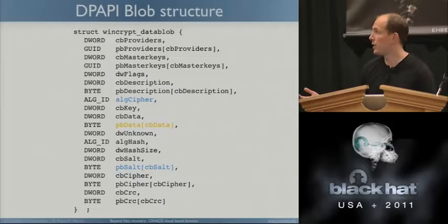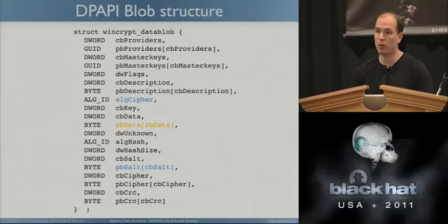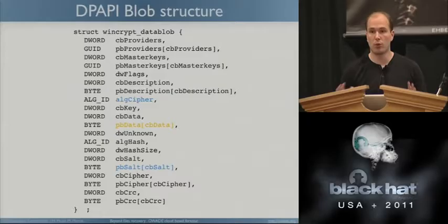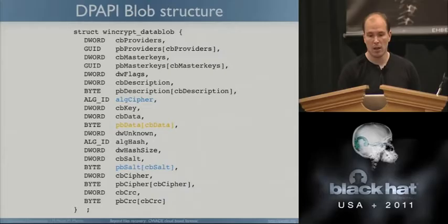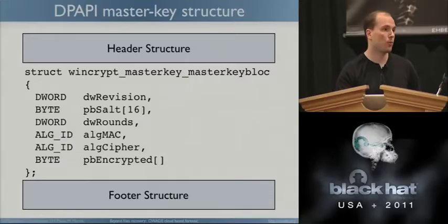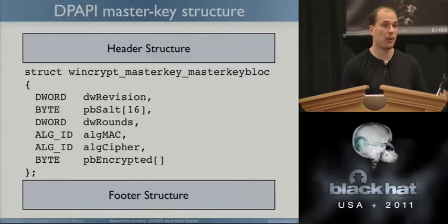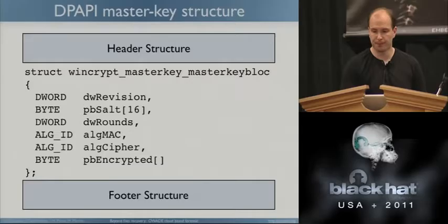The structure of a DPAPI data blob contains the cipher to use — Triple DES on XP, AES on Windows 7 — the encrypted data, and a salt so that two identical blobs can't be identified as the same. The master key file contains a salt, a MAC algorithm for integrity, and a ciphertext block encrypted with the cipher algorithm (Triple DES for XP, AES for Windows 7). For a detailed understanding of DPAPI, we published a presentation about it about a year ago.